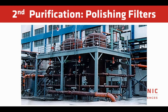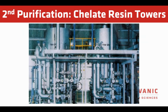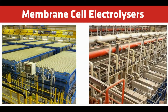Next, the brine receives secondary purification. The first step is polishing filtration, which reduces suspended solids and protects the ion exchange resin from damage. The chelating ion exchange resin treatment then reduces hardness down to low ppb levels, allowing the brine to enter the membrane cell without causing any damage. Finally, the purified brine can enter the membrane cell for electrolysis.